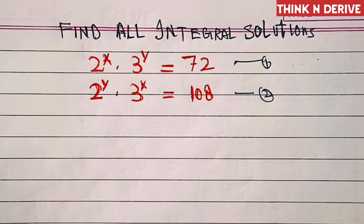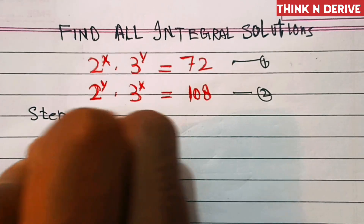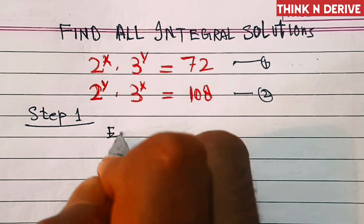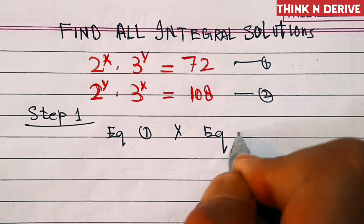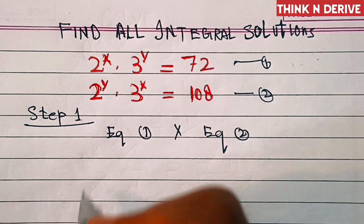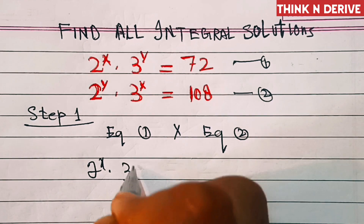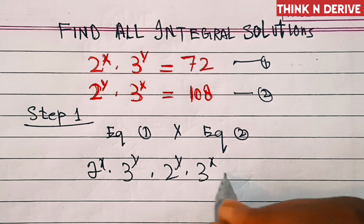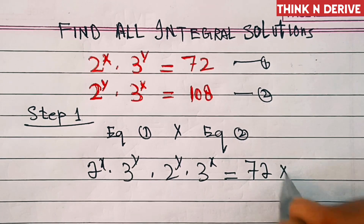I am going to divide this problem into two steps. In step number one, let's multiply equation one and equation two. So that is 2 power x into 3 power y, into 2 power y into 3 power x, is equal to 72 into 108.